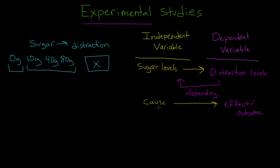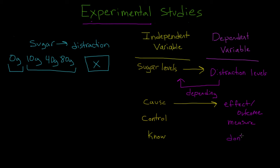If those don't work for you, try to remember that the independent variable is the one that you, as the experimenter, change — you control its levels. And the dependent variable is the one that you are measuring. So we are controlling the levels of sugar and we are measuring distraction levels. Yet another way to think about this: the independent variable is the variable that we know, because we defined and set it up — we chose it. That makes the numbers associated with the dependent variable the ones we don't know — those are the ones we're trying to measure, the ones we're looking for.